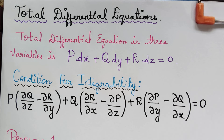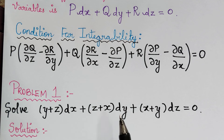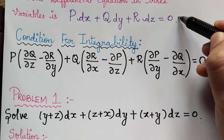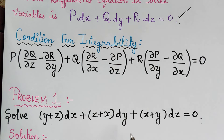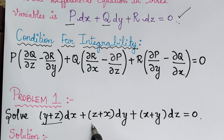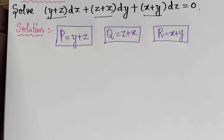We shall now proceed to solve the problem: solve (y + z)dx + (z + x)dy + (x + y)dz = 0. Comparing with the standard form P dx + Q dy + R dz = 0, we identify P = y + z, Q = z + x, and R = x + y.